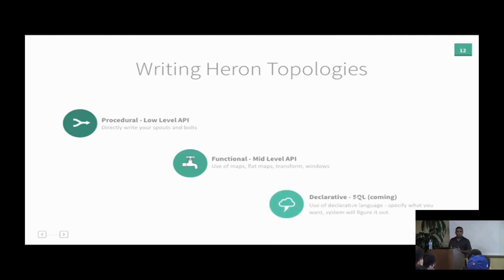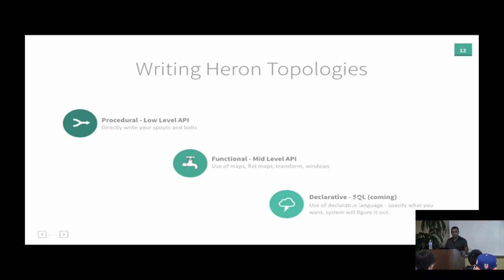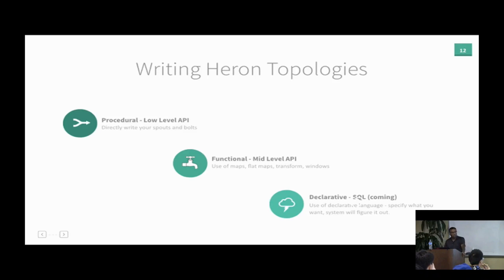There are multiple ways to write a Heron topology. The lowest level is procedural — you write code directly as spout and bolt classes, useful for cases like processing video data. The second level is functional, using maps, flat maps, transforms, and windows — more Scala-like. The third is declarative SQL, which we haven't finished yet but is coming — you just say what you want and the system figures out how to do it.